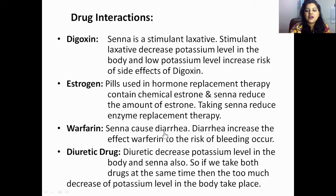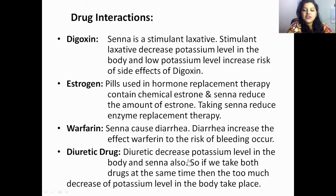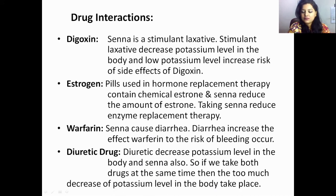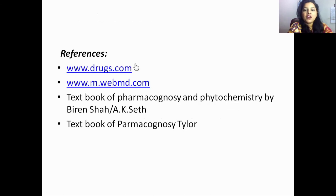Warfarin interaction: Senna causes diarrhea, and diarrhea increases the effect of warfarin, raising the risk of bleeding. Diuretic drug interaction: diuretics also decrease the potassium level in the body — this is a synergistic effect with Senna. Taking both drugs simultaneously causes excessive decrease of potassium levels in the body.